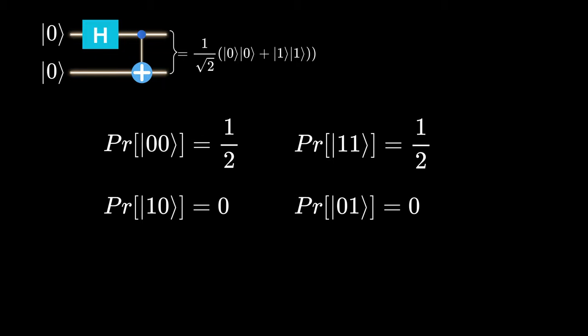However, in the same scenario, the probability of finding them in the state 0, 1 or 1, 0 drops to 0, effectively making these states impossible. These counterintuitive outcomes is part of the delightful mystery that makes quantum entanglement so captivating.